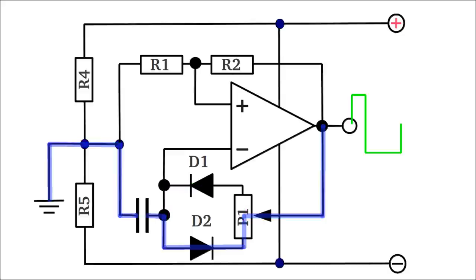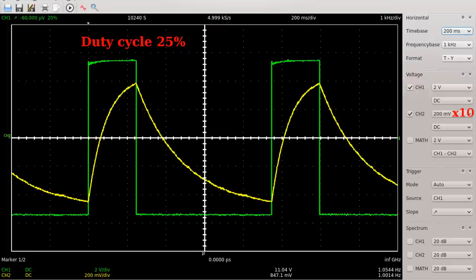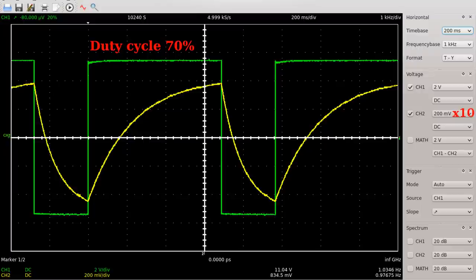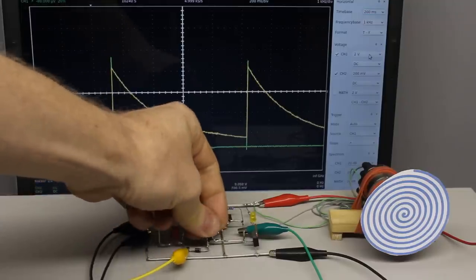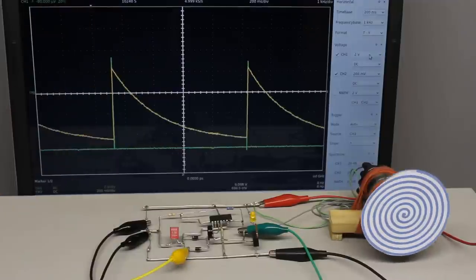At the oscilloscope plot, you can see that the average gradient or the curve progression of the charging respectively discharging procedure is increasing or decreasing depending on the adjustment of the potentiometer. The duty cycle and so the power sent to the motor can be adjusted by turning the potentiometer.